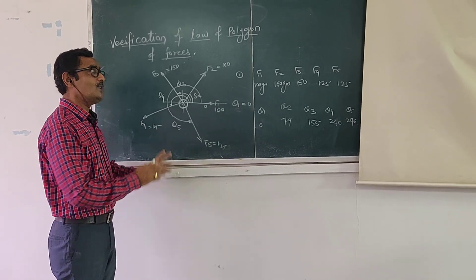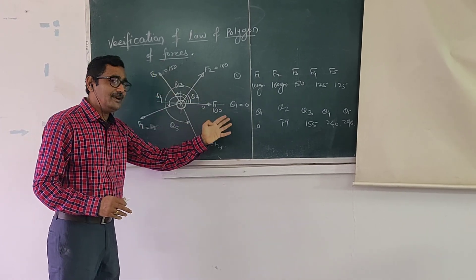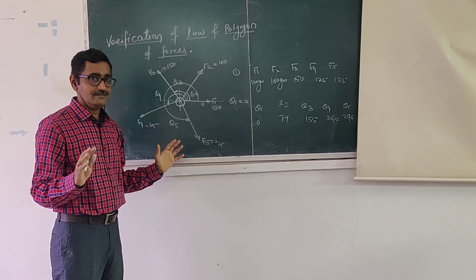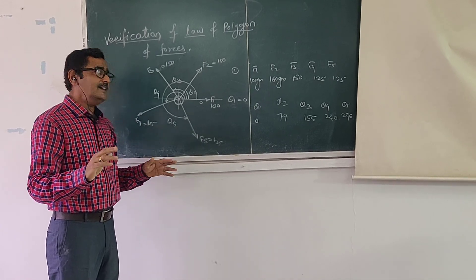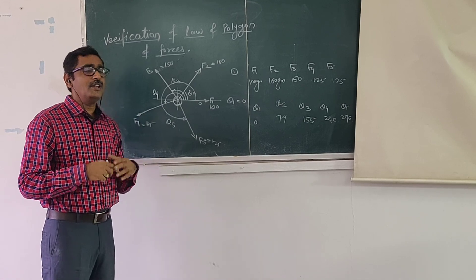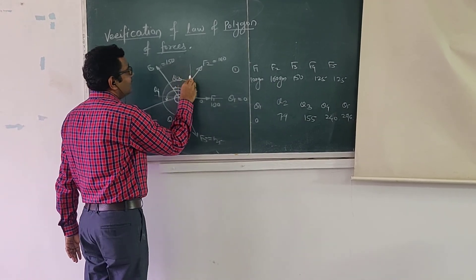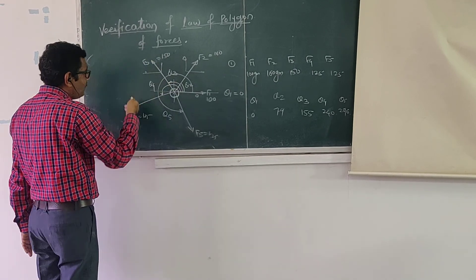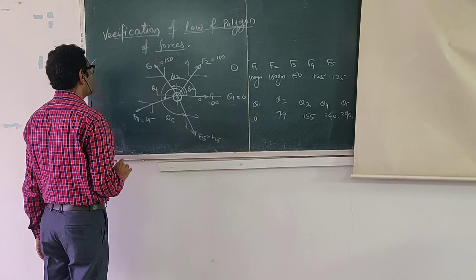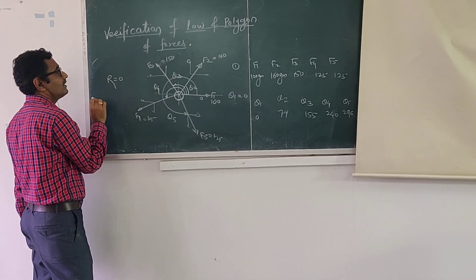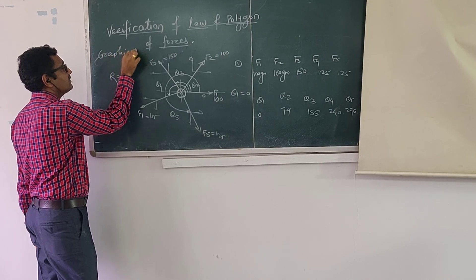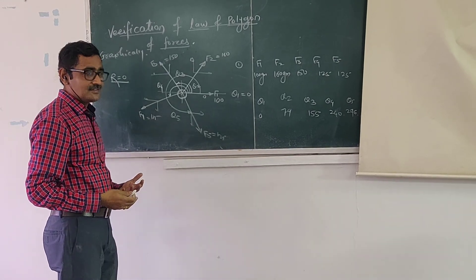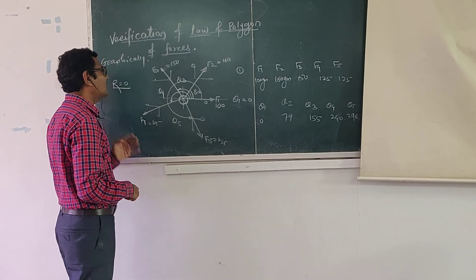In my next video I am going to explain you how to do the calculation. If the resultant is not zero, and if you plot the force polygon and observe that the resultant is not zero — similarly if you calculate the resultant analytically — by plotting the force polygon graphically or by resolving the forces analytically, the resultant must be zero. Graphically the force polygon must be a closed figure, and analytically the resultant must be zero.